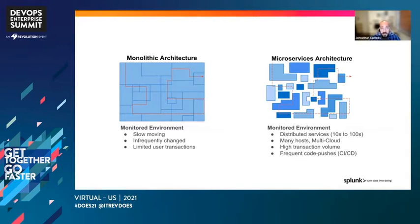When we looked at a microservice architecture and evolved to it, we found that we had much more distributed services — 10 to 100 different services across many different hosts, across different clouds, with high transaction volumes, and frequent code pushes across our CI/CD pipeline. Things are a bit overwhelming when it comes to microservices architectures.